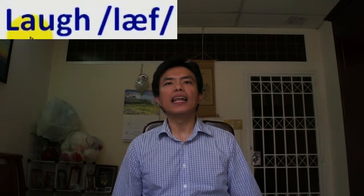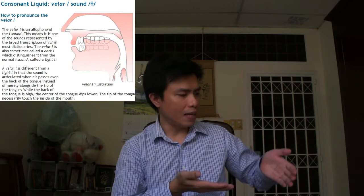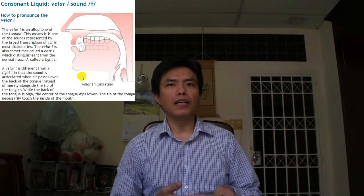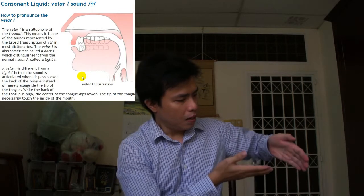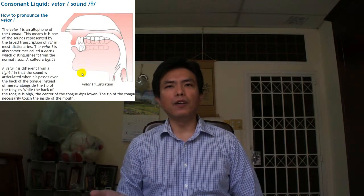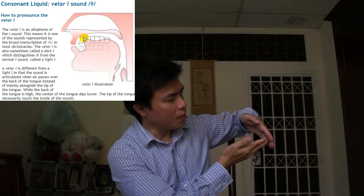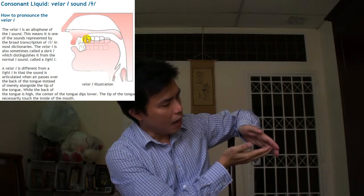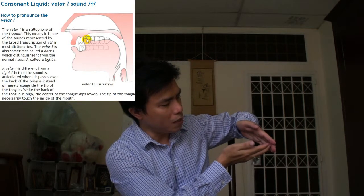Bạn thấy là lúc bắt đầu phát âm thì cái đầu lưỡi mình đụng vào cái phần lằm lợi ở ngay cái đường trung tuyến. Và để phát âm cái âm L tối thì bởi vì cái âm L tối là nó nằm sau một cái nguyên âm, do đó sau khi mà kết thúc phát âm nguyên âm rồi thì cái đầu lưỡi của bạn phải đụng cái phần lằm lợi và bạn giữ luôn ở đó khoảng một vài phần trăm giây để phát âm cái âm L tối, chứ bạn không có bật nó xuống.